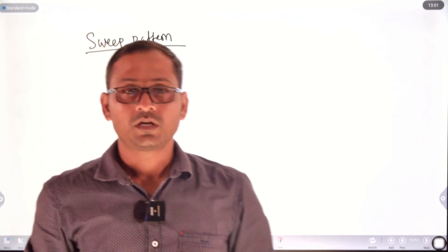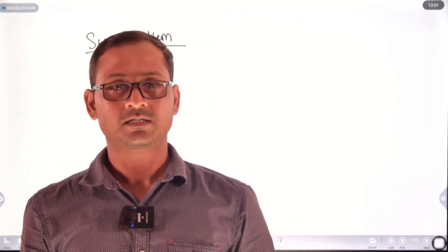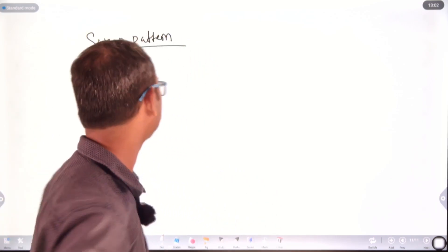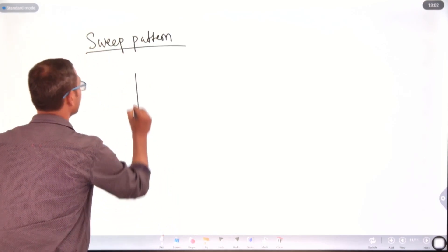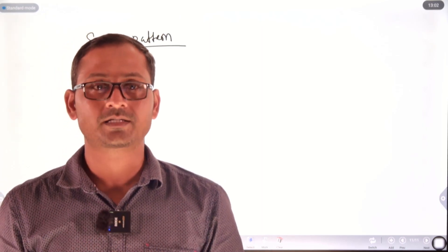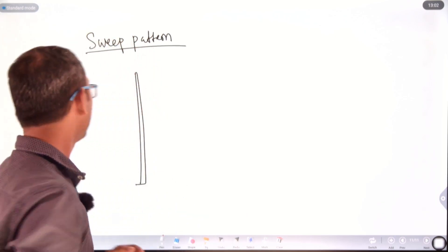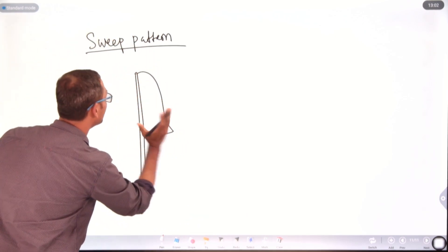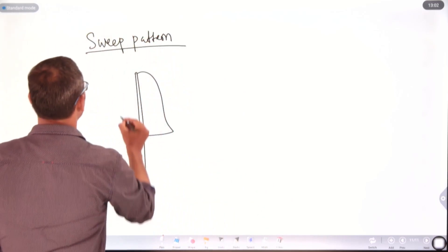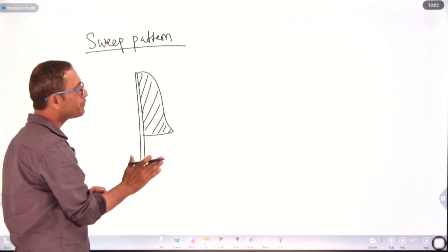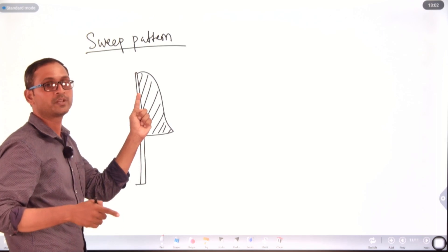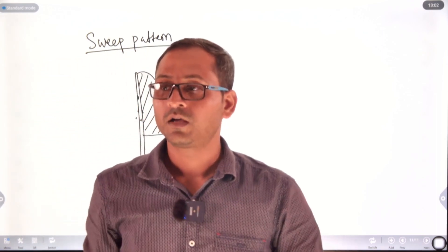The sweep pattern is used for symmetrical or axisymmetrical shape castings, such as a bell shape. We only take the contour of one side of the casting, sweep it around the sand mold, and create the entire 3D object. The pattern plate has the contour of the casting on one side; we rotate it around an axis in the sand bed to get the complete 3D pattern. This is the sweep pattern.